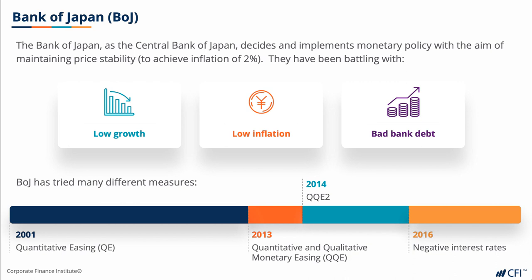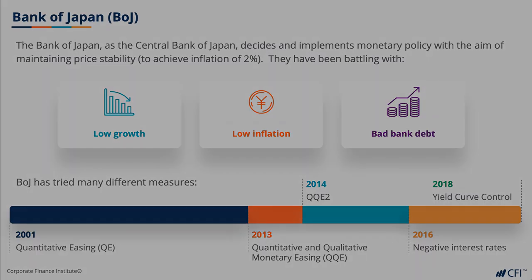And most recently, in 2018, the Bank of Japan introduced YCC — known as Yield Curve Control — and we'll explain that in more detail a couple of slides along. Going back to QQE for a moment, after the Bank of Japan introduced quantitative easing in 2001,